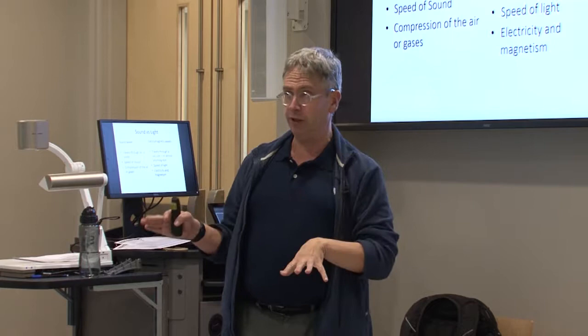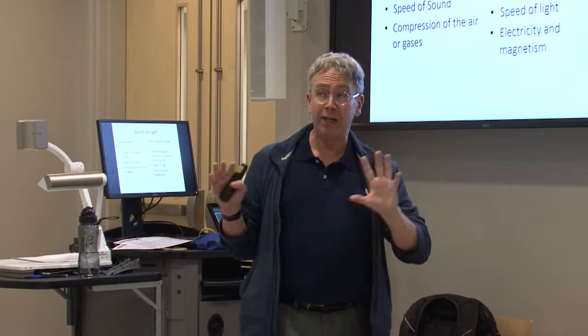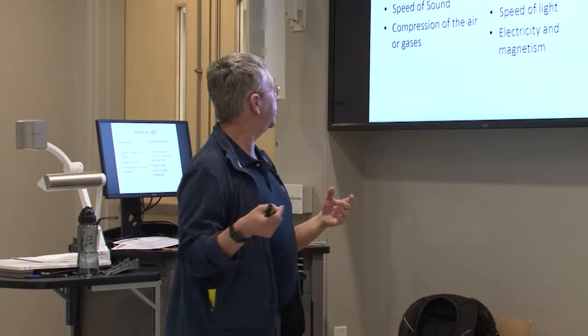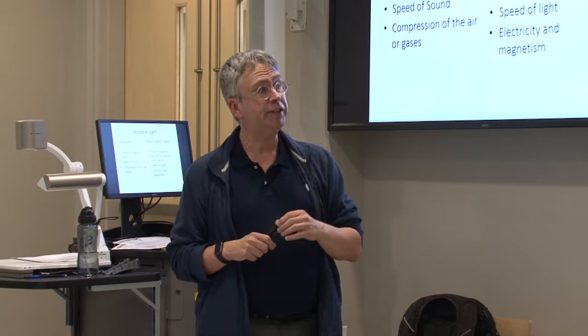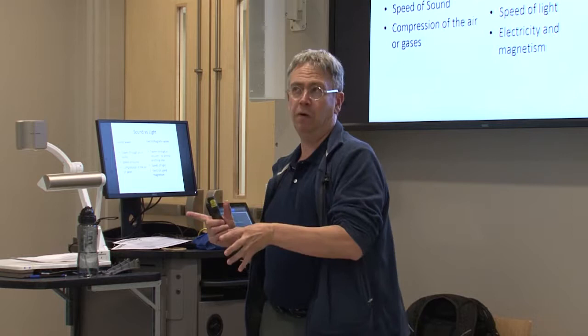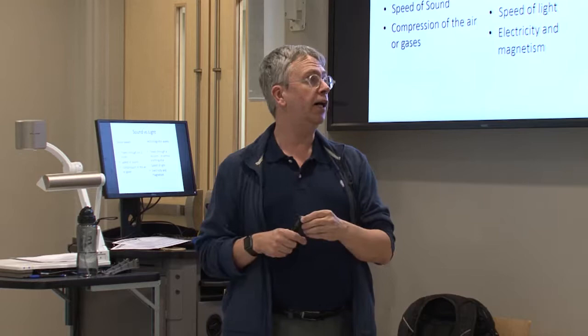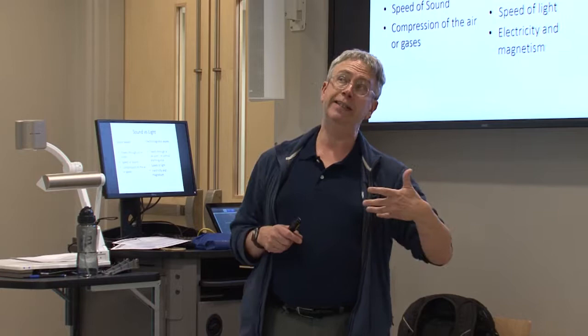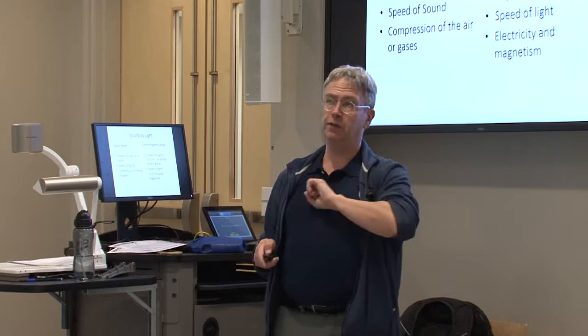Sound travels through air — you don't hear sound in a vacuum. It travels at the speed of sound, which is about 750-800 miles an hour, and it's based on the compression of air — compression waves. Light, on the other hand, travels through basically almost everything, including a vacuum. It doesn't need air to travel. Electricity and magnetism work together, and light propagates by itself. It travels not at the speed of sound, but at the speed of light. And it is electricity and magnetism — so it's not compression waves.